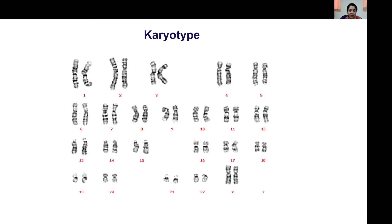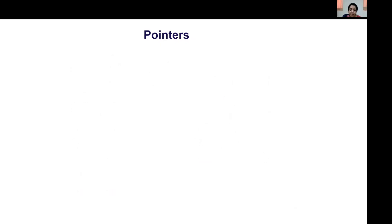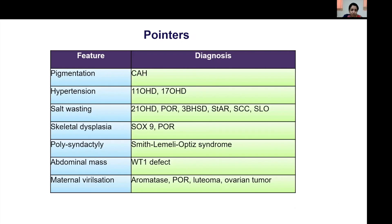Karyotype is an important investigation to confirm the genetic sex of the individual. Given the high chances of mosaicism in these individuals, it is important to analyze at least 50 metaphase plates. Since karyotype takes around 21 days turnaround time, a FISH technique can be used to quickly determine the Y material or the SRY gene when early sex determination is needed.